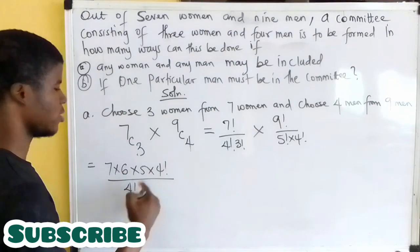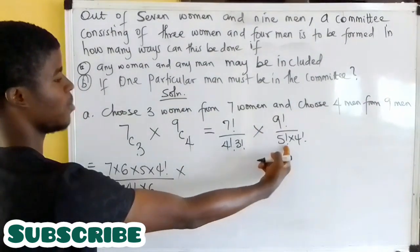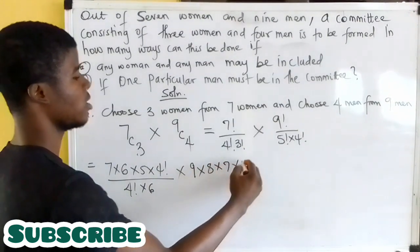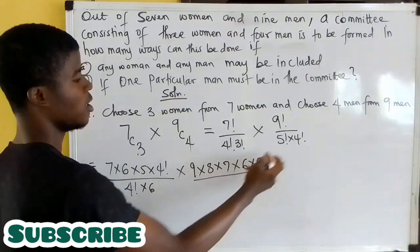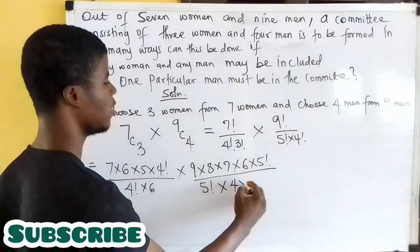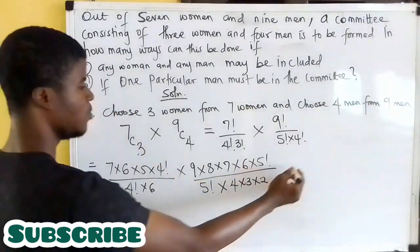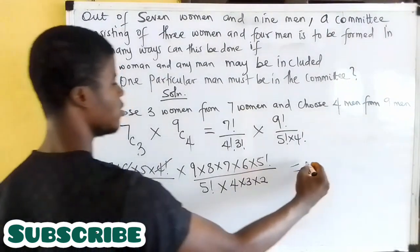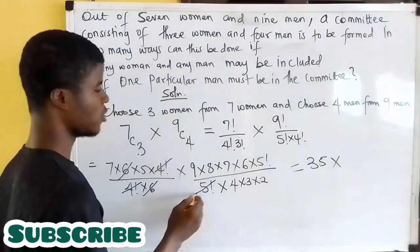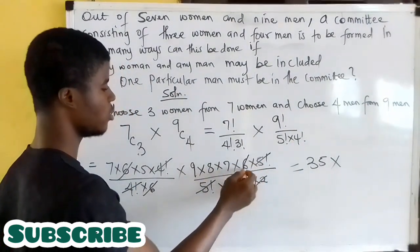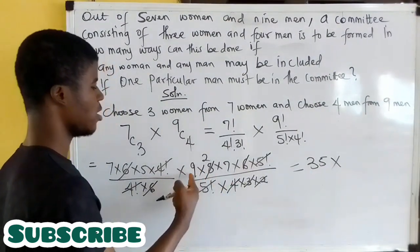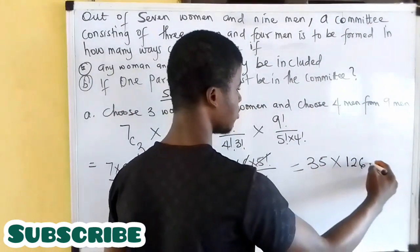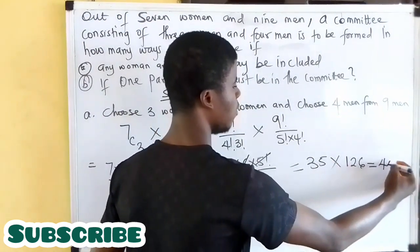Three factorial is six, which is three times two. Seven factorial is seven times six times five times four factorial, all over four factorial. Nine factorial is nine times eight times seven times six times five factorial, all over five factorial times four factorial — that's four times three times two. Four factorial cancels four factorial, six cancels six. Seven times five is 35. For the nine combination four: four cancels eight two times, giving nine times two times seven, which is 126.